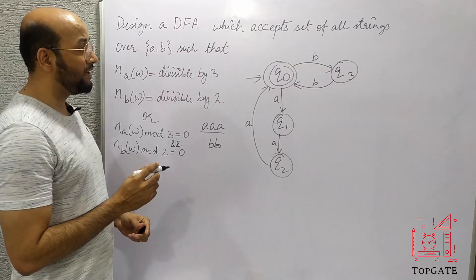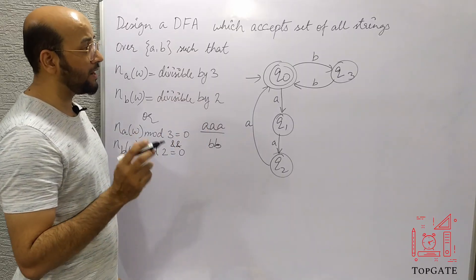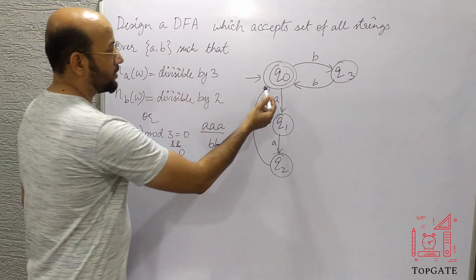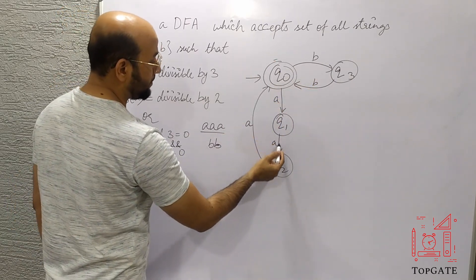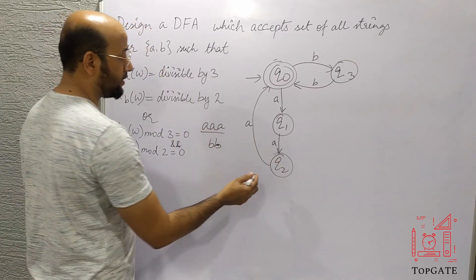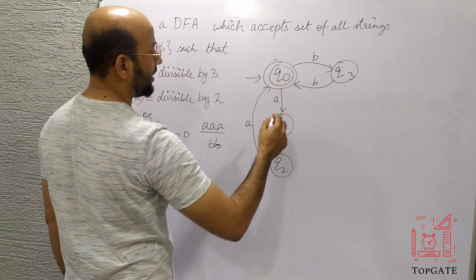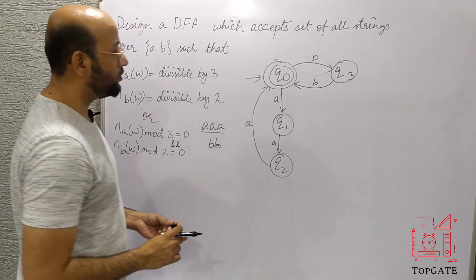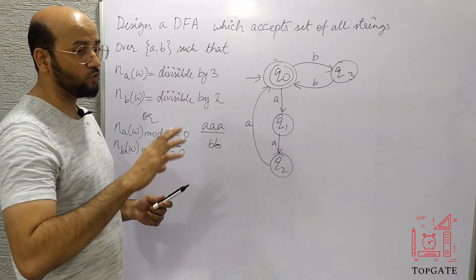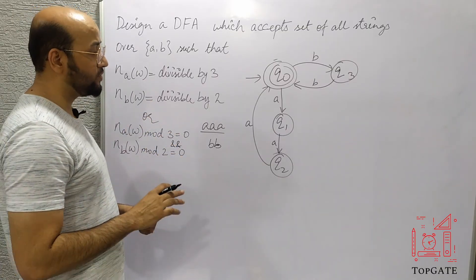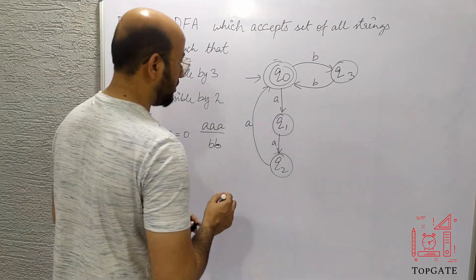In a DFA, all states must have exactly one transition for each input symbol. Q0 is complete with one path for A and one for B. Q1 has a path for A but is missing a path for B. Q2 has a path for A but is missing a path for B. Q3 has a path for B but is missing a path for A.